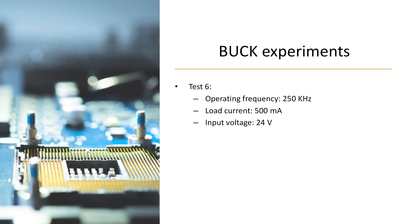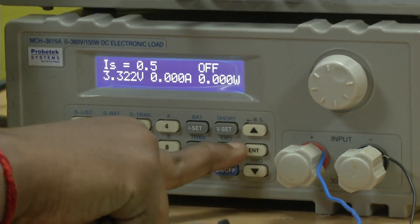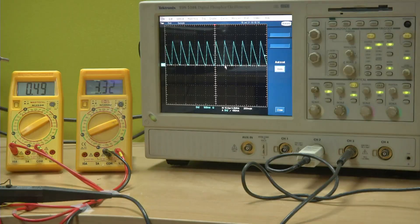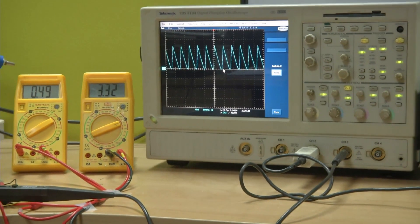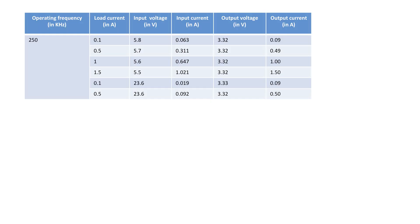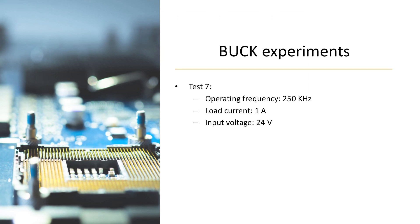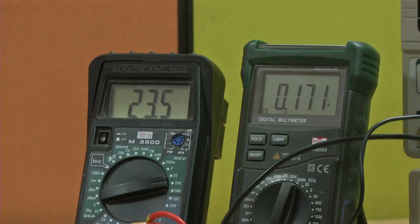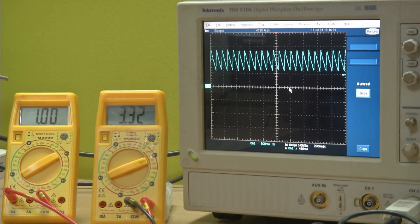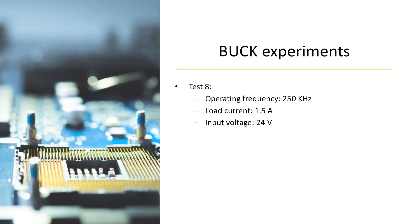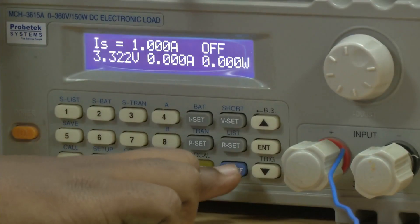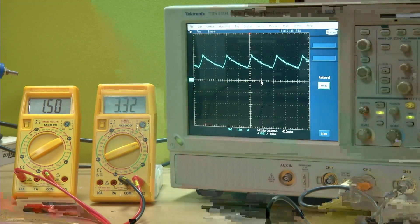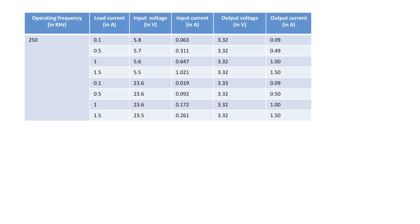Again we change the load current to 500 milliamperes. Look at the input voltage and the input current. Then we set it back to 1 ampere and repeat the experiment — look at the inductor current, that is your input, this is your output, and that is the current waveform. Then change it to 1.5 amperes, look at the input voltage, the output voltage and output current, and then look at the current waveform.